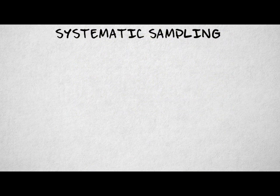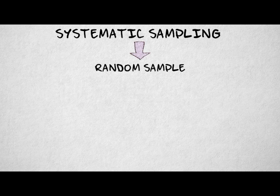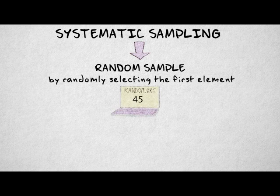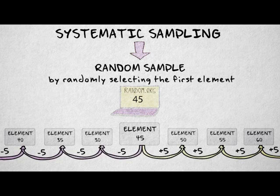Systematic sampling is a related method that also aims to obtain a random sample. In systematic sampling, only the first element is selected using a random number. The other elements are selected by systematically skipping a certain number of elements.